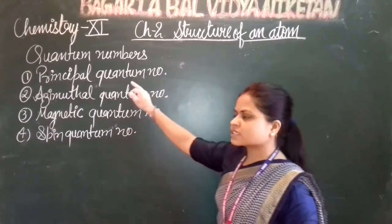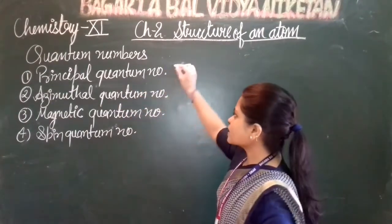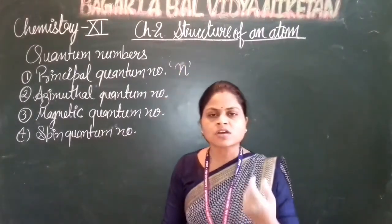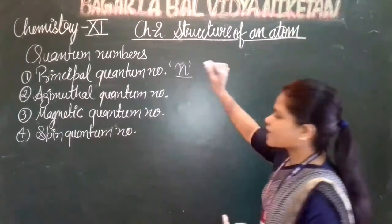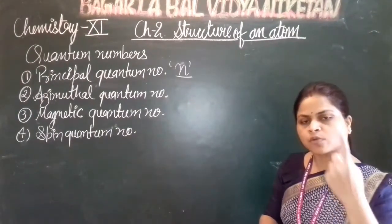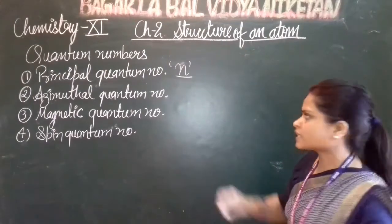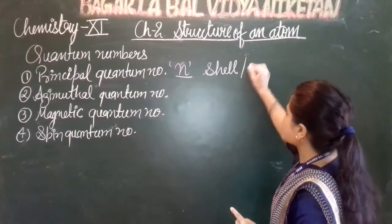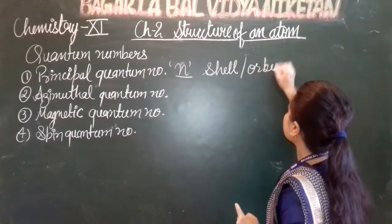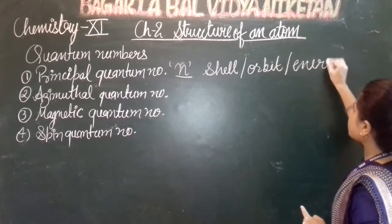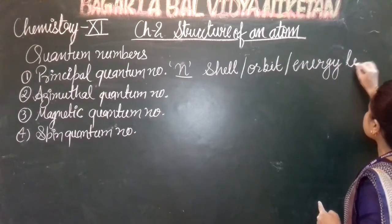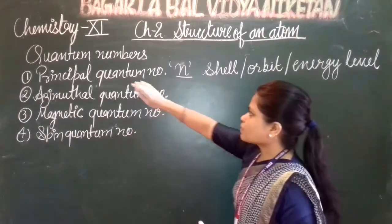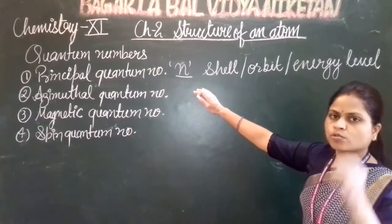First, let us talk about the principal quantum number. It is represented by small n. You know that n is also used for shell or energy level. So the shell, orbit, and energy level are all indicated by the principal quantum number n. If we know the principal quantum number, we can determine the shell number of the electron.